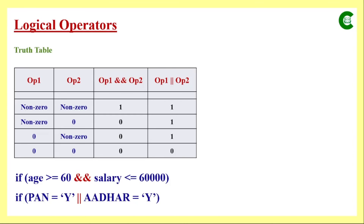This was all about relational and logical operators in brief, as used in C programs. This will be more clear when we use them more in real-time programs. That's all for today. See you in the next class. Thank you.